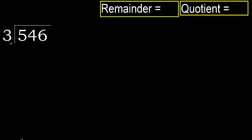546 divided by 3. 5 is not less — working with 5: 3 multiplied by which number is nearest to 5 but not greater? 3 multiply by 2 equals 6, which is greater. So multiply by 1 — 3 is not greater. Subtract: 5 minus 3 equals 2.